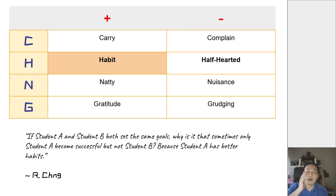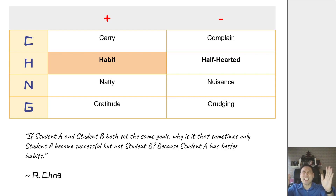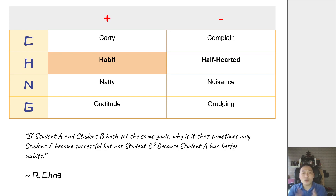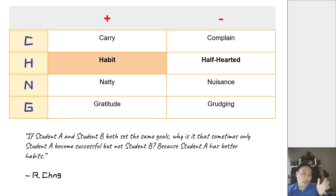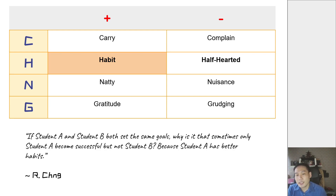The third point is about habit. If student A and student B both set the goal at the beginning of the year — 'I want to get A1 for mathematics' — good. We know it's important to set goals because without goals we don't know how to progress. But I will argue that goals are not the most important thing. The reason student A is successful and student B is not is that student A has better habits.